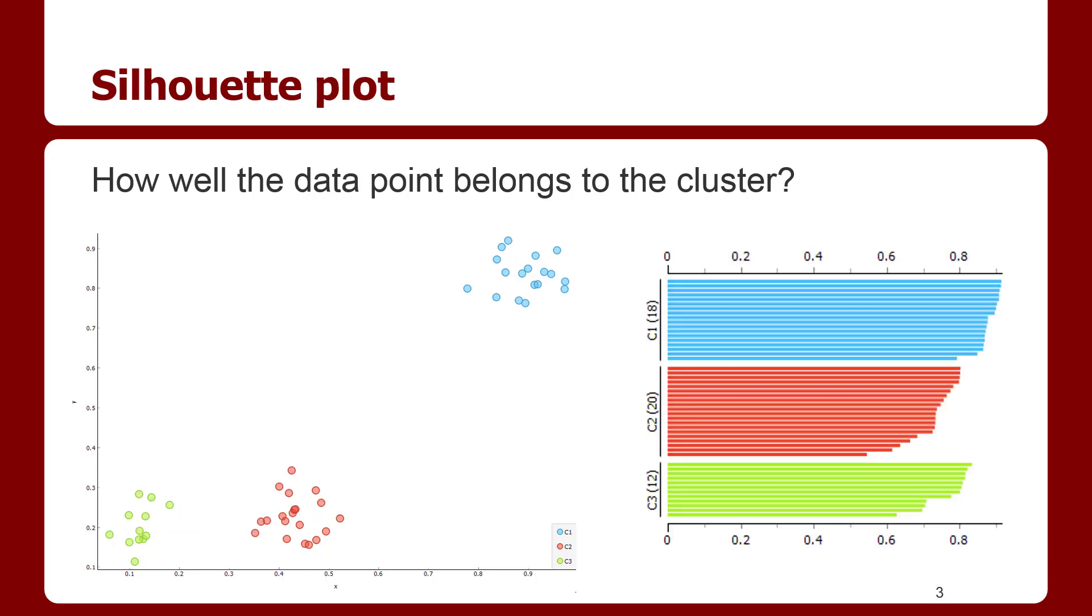This silhouette plot shows the silhouette scores from our three clusters. The silhouette score is in the range between minus one and one. You can see in our silhouette plot that the score is greater than zero and it has quite a large value here. So each point well belongs to its cluster.